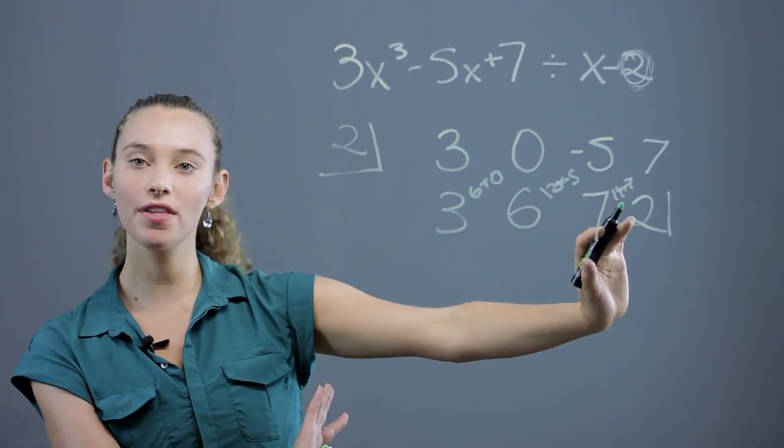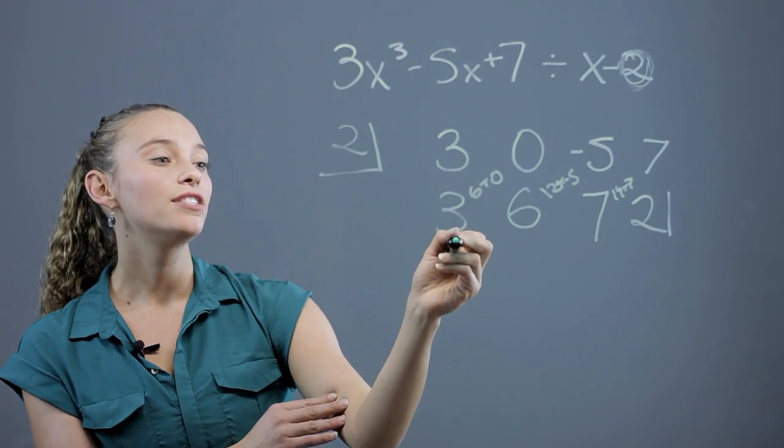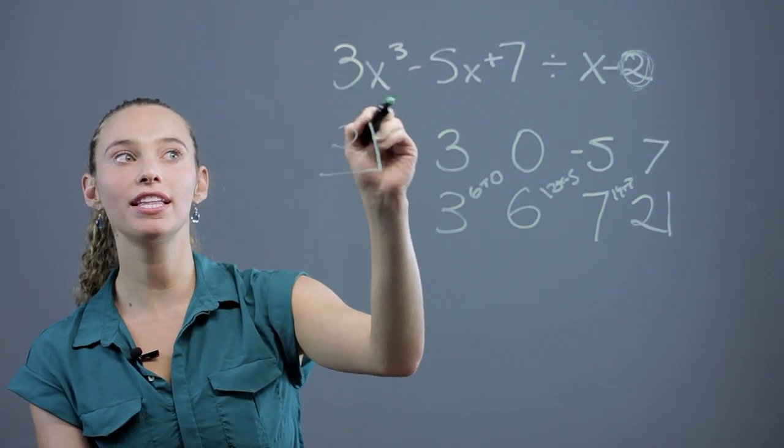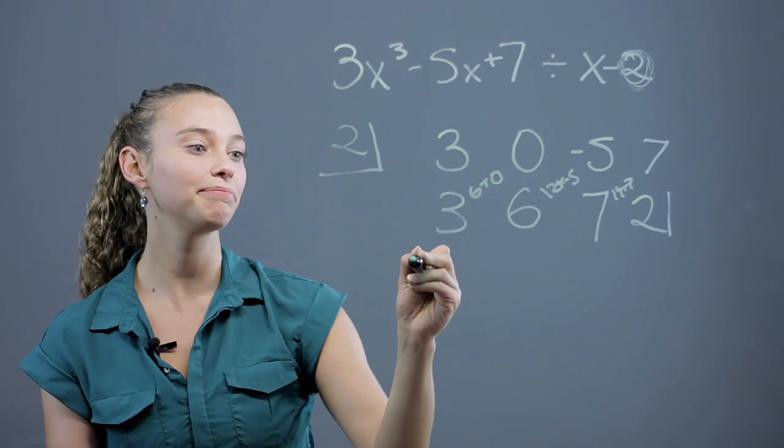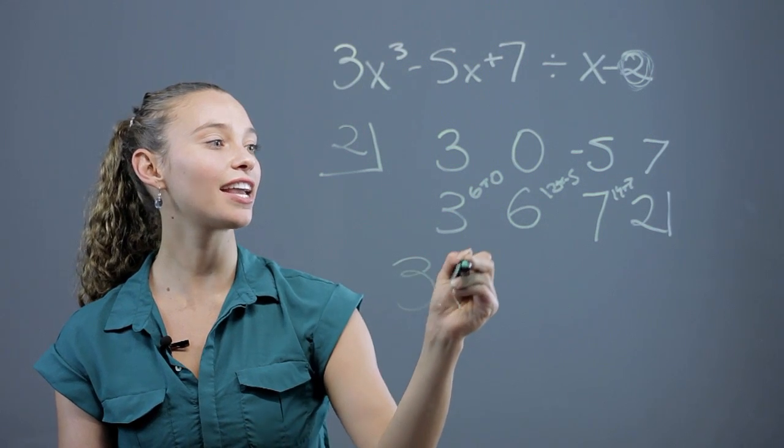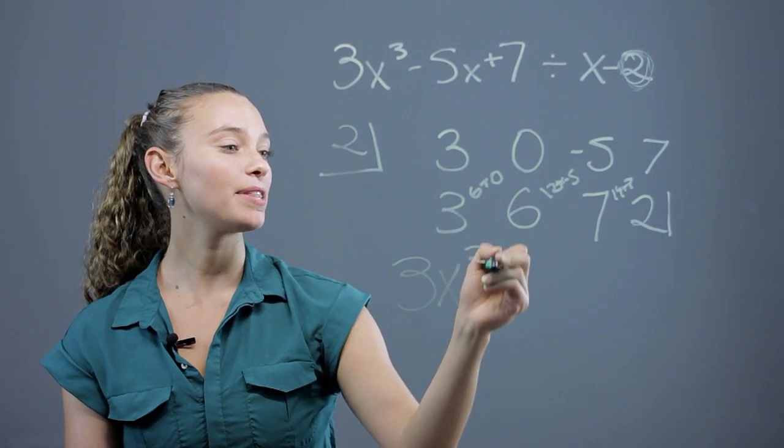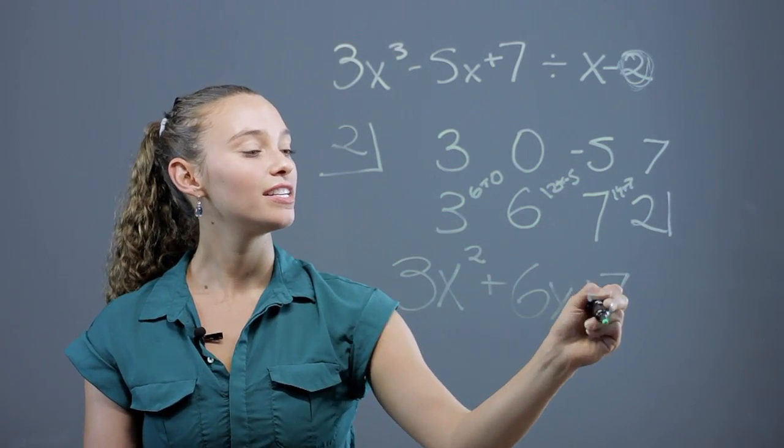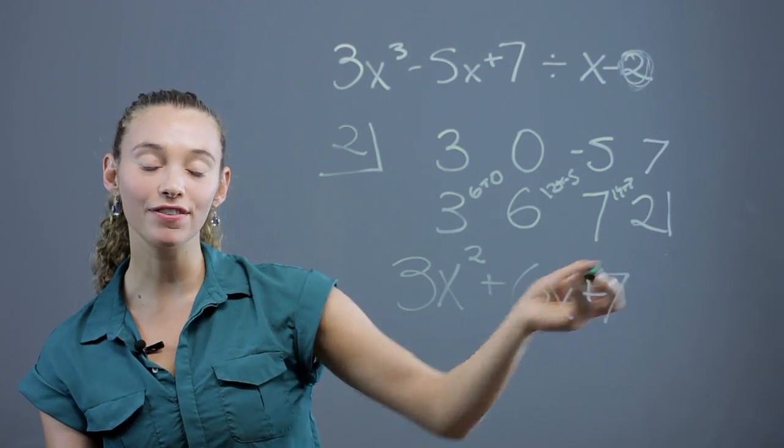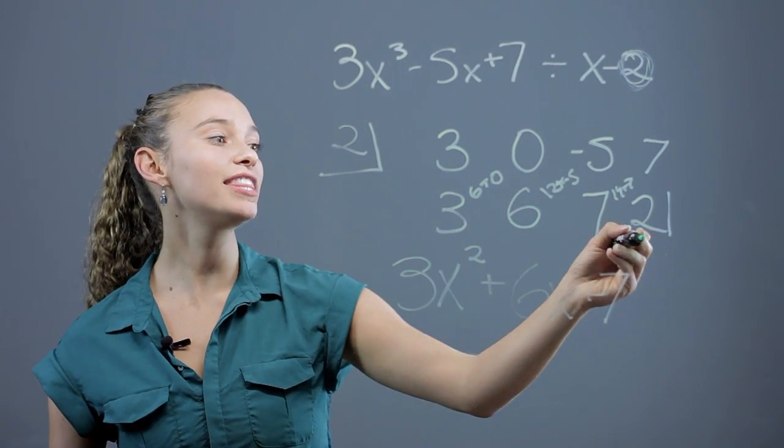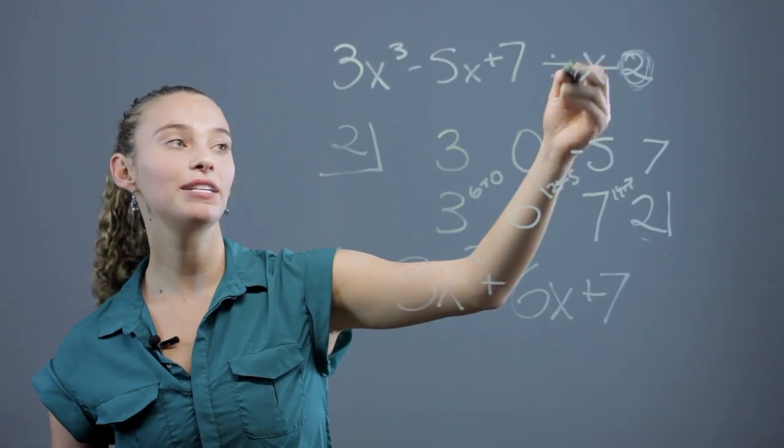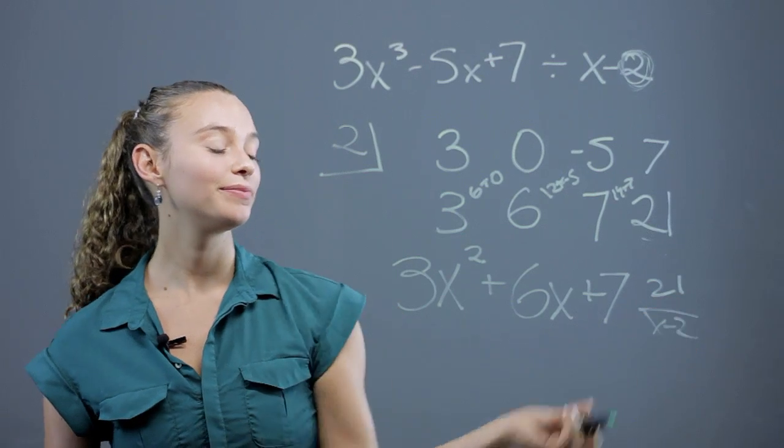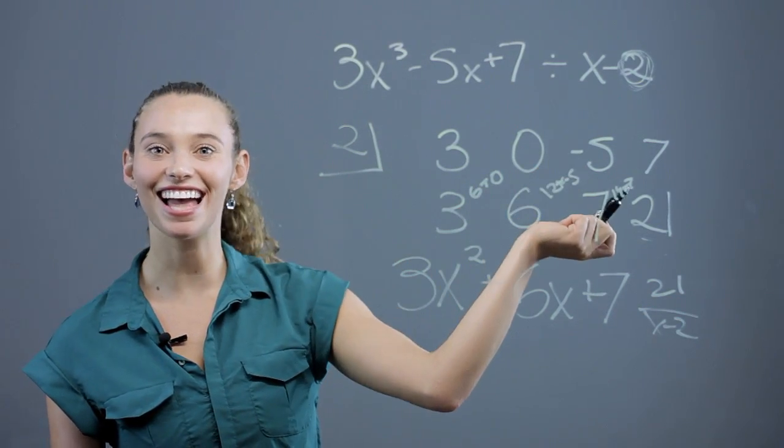Now, we have gone through all the numbers, and all we do is start with the next exponent after this one. So, this is x to the third, so we're going to go x to the second. So, you just do 3x squared plus 6x plus 7. And then, we still have the 21 left, so that becomes the remainder. And we put that over the one we divided by, the x minus 2. 21 over x minus 2. And that's the answer. It magically turns into that using the box method.